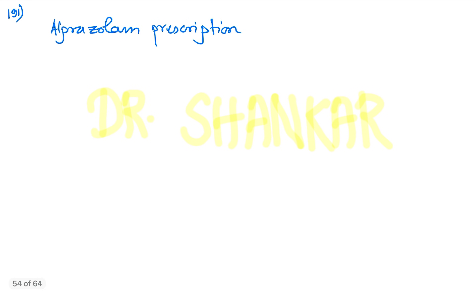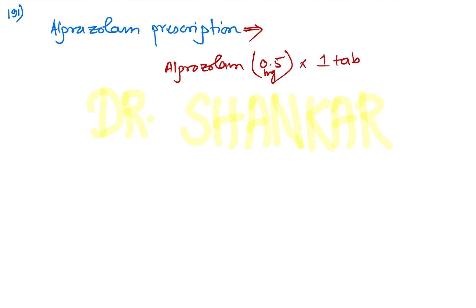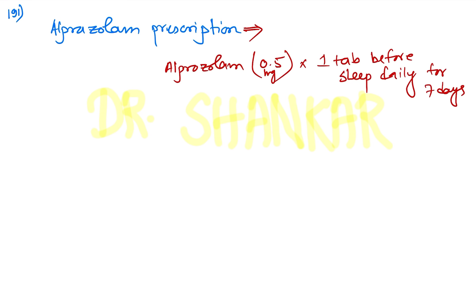Regarding alprazolam prescription format: the correct option appears to be option B — alprazolam 0.5 mg, one tablet before sleep, for seven days. Only one option included the quantity, frequency, timing, and inpatient prescription language correctly, making it the best possible answer.